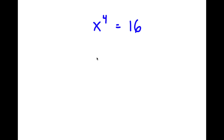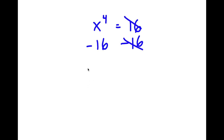So in this problem, I have x to the power of 4 is equal to 16. I'm going to first start by subtracting 16 on both sides. These two cancel out, and I'm left with x to the power of 4 minus 16 is equal to 0.